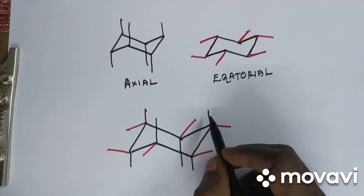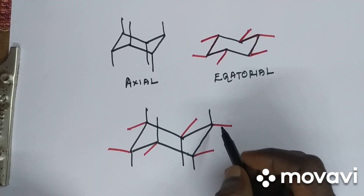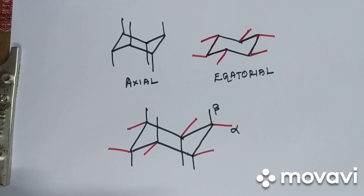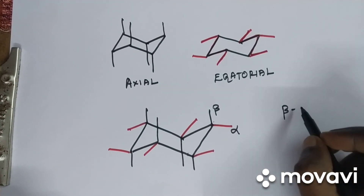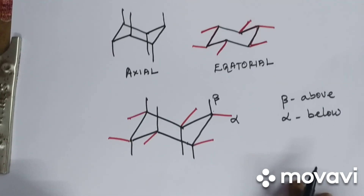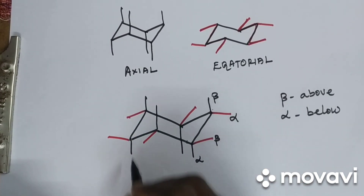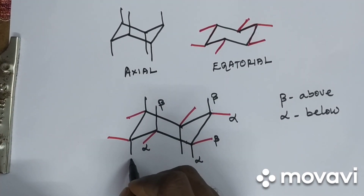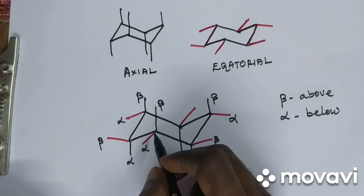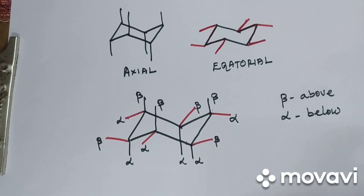Look at one carbon — it has two bonds, one axial and one equatorial. The bond that is above is generally represented as beta; the one that is below is represented as alpha. Beta represents above, alpha represents below. On another carbon, equatorial is above so that is beta and axial is below so that is alpha. Similarly, going around the ring: alpha, beta, beta, alpha, beta — the bonds lying above are beta, bonds lying below are alpha.